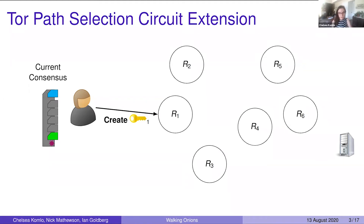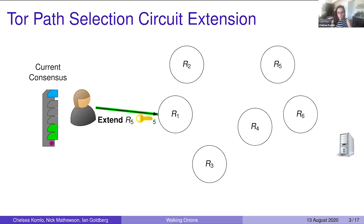To create this path through the network, the user first selects one relay from the consensus. They do this by sampling a relay at random, where all relays are weighted by the amount of bandwidth that they contribute to the network. Then the user creates a circuit by performing a key exchange with that relay, and then selects the next relay in the hop and asks the first relay to forward their request and response to this relay.